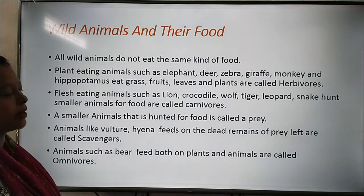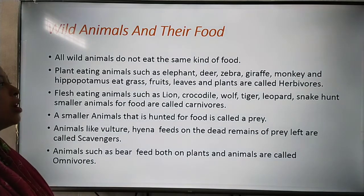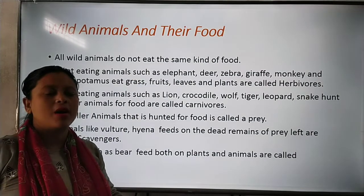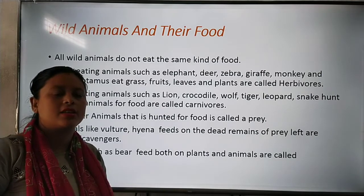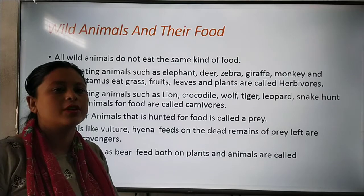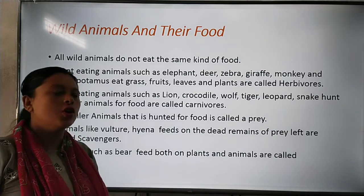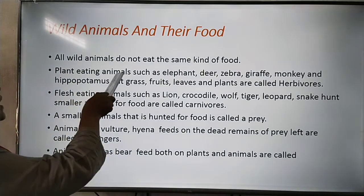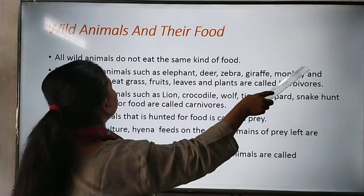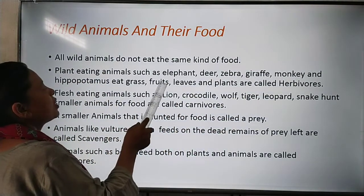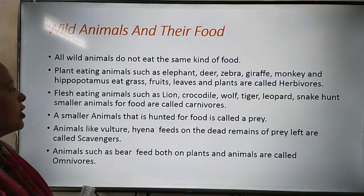Now, wild animals and their food. All wild animals do not eat the same kind of food. Monkey, bear, lion, tiger and fish are all wild animals — they need food to live, but they do not eat the same kind of food. Plant-eating animals such as elephant, deer, zebra, giraffe, monkey and hippopotamus eat grass, fruits, leaves and plants — these are called herbivores.